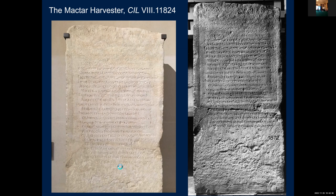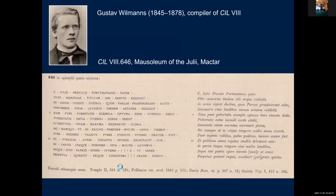Mactar has in fact produced a remarkable total of 15 verse inscriptions including the harvester poem, dating from the second or third century right through to the sixth century. These include a group of four verse texts on the mausoleum of the Julii — clearly a family who wished to advertise their learning and literary pretensions. The first of these commemorates a son who died at 22, having shown great promise as an orator: 'A boy strong in the intellect, well-behaved as a teenager, as a young man he was an orator, and in a toga he delighted the ears of the public with his learning.'